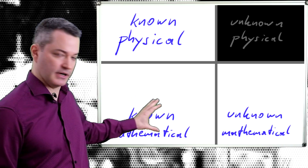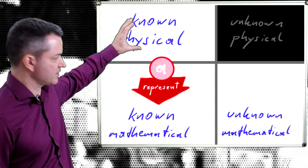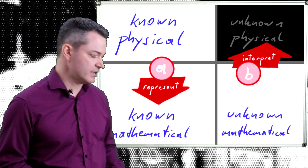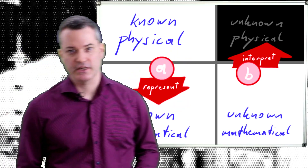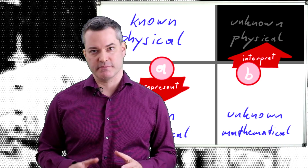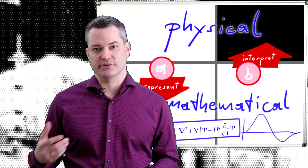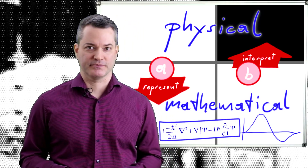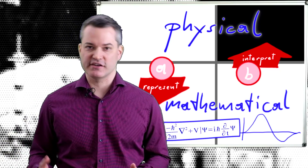I want to emphasize some points you should take away from this video. In order to have a physical theory, we must couple the mathematical part of the theory to the physical world by postulating: (a) a prescription about how to represent physical knowledge mathematically, and (b) a prescription about how to interpret mathematical solutions physically. These prescriptions are not optional or negotiable — they are as vital a part of the theory as the mathematical equations.